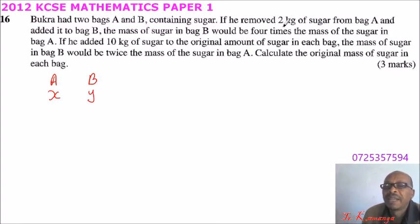So we are told if he removed 2 kg of sugar from A, that means that the mass in A would be X minus 2, and added to B.